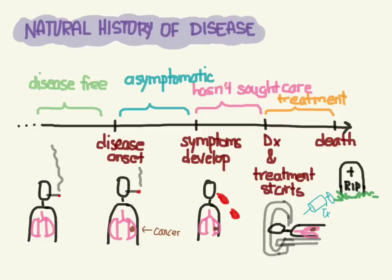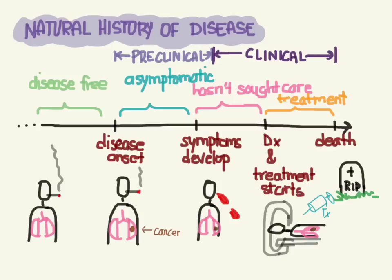So this is the natural history of disease. We call this phase the preclinical phase, because we haven't actually started doing anything. And then from symptom onset until the eventual outcome, we call that the clinical phase, because now the disease is clinically apparent.